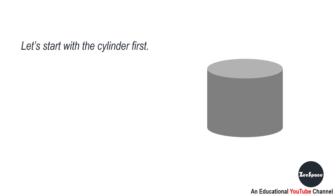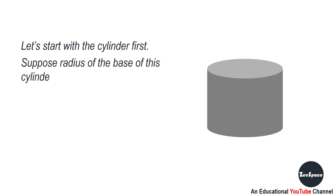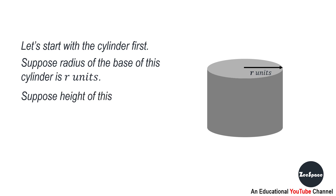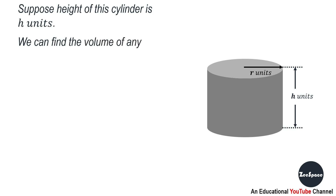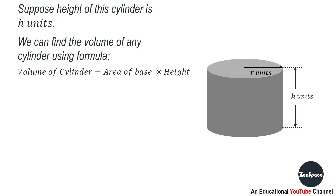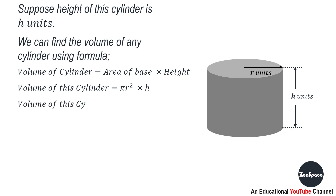Let's start with the cylinder first. Suppose the radius of the base of this cylinder is R units and the height is H units. We can find the volume of any cylinder using the formula: volume of cylinder is equal to area of base times height. Since the base of the cylinder is always circular and the area of a circle is pi r squared, the volume of the cylinder equals pi r squared times H.